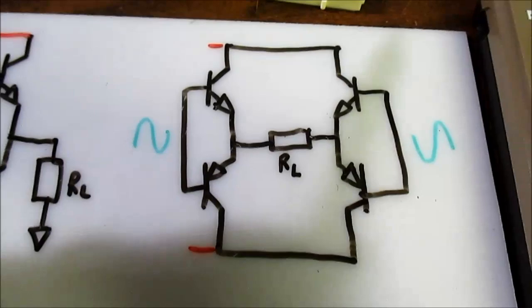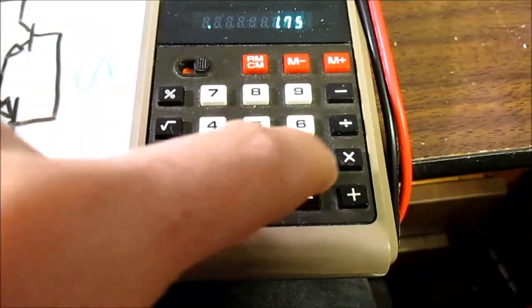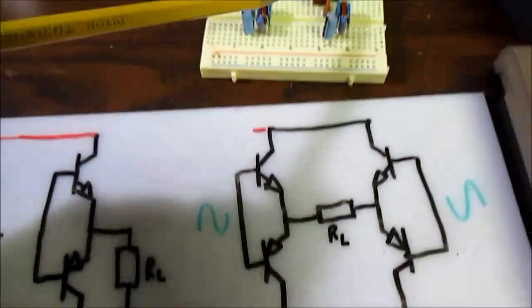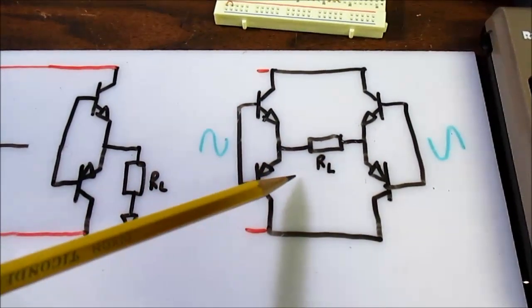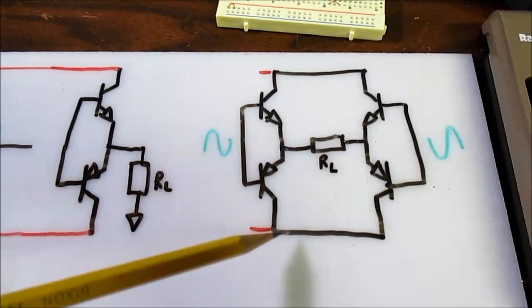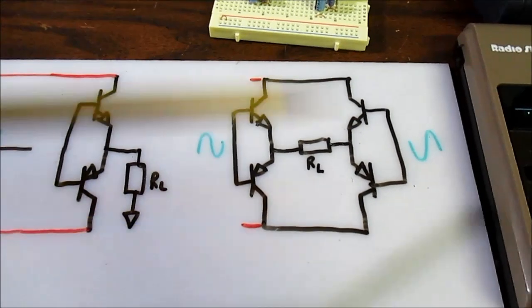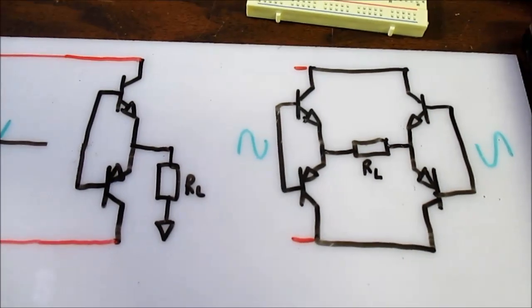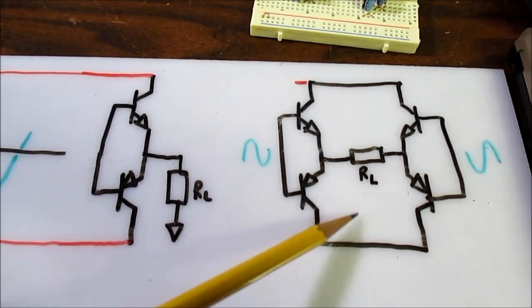That'll be 3.5 amps now. So if this was an LM1875, it's not going to work because you're exceeding its current limit. And you also have to consider that speakers are a reactive load and will draw more current. Yeah, there's so many problems in the real world that you run into. So you have to remember that when you're going to bridge something.